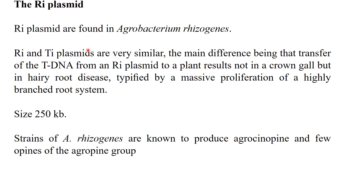Ri plasmids are found in Agrobacterium rhizogenes. Ri and Ti plasmids are very similar, but the main difference is that the transfer of T-DNA from an Ri plasmid to the plant results not in crown gall disease but in hairy root disease. Ti is the tumour inducer causing crown gall disease, while Ri also induces tumour but as hairy root disease, typified by the massive proliferation of a highly branched root system.